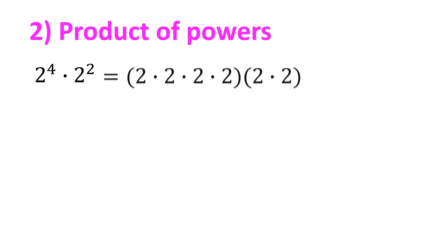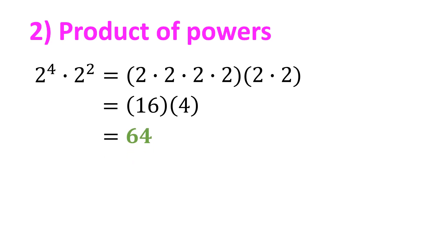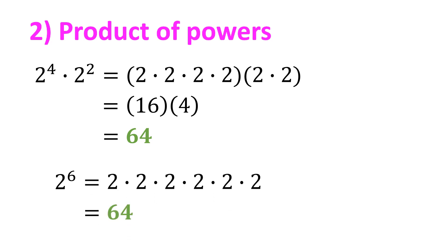To show this, let's evaluate 2 raised to 4 times 2 raised to 2. This equals 4 twos multiplied together times 2 twos multiplied together, which is 16 times 4, and 16 times 4 is 64. Now let's evaluate 2 raised to 4 plus 2, or 2 raised to 6. This equals 6 twos multiplied together, which is also 64.